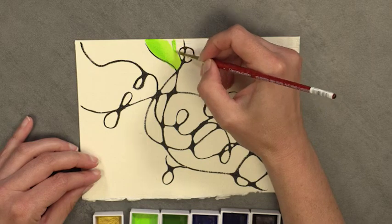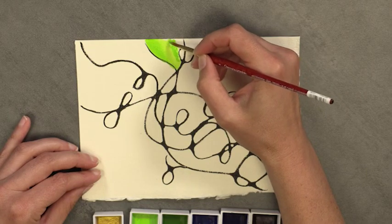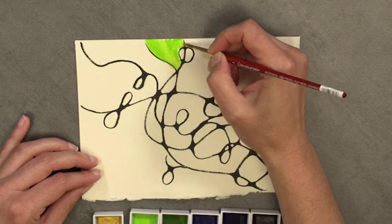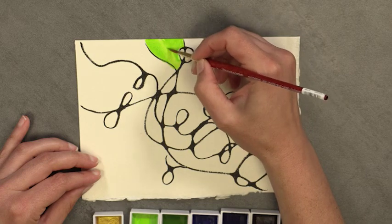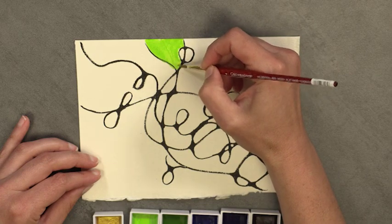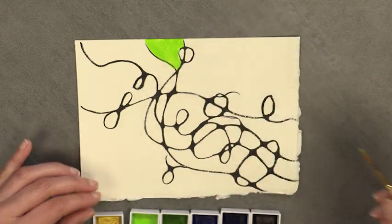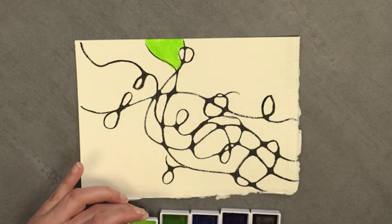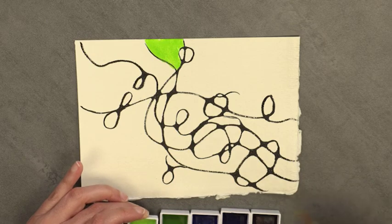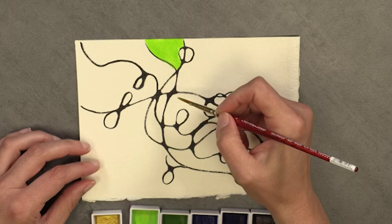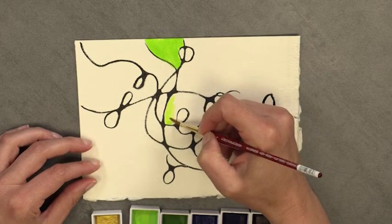You'll see it's fairly opaque when it's in that creamy consistency. Not quite like a gouache. A gouache tends to be more solid and has a very flat finish, whereas this has that watercolor finish that has that slight gloss to it. And you do get some paper through the paint, even though it is fairly opaque in this consistency.